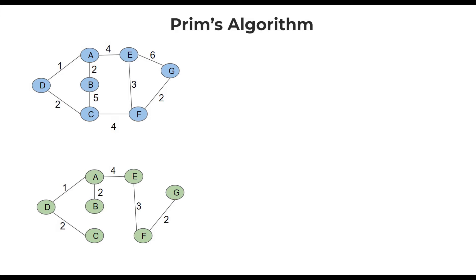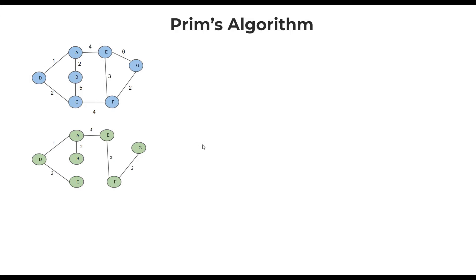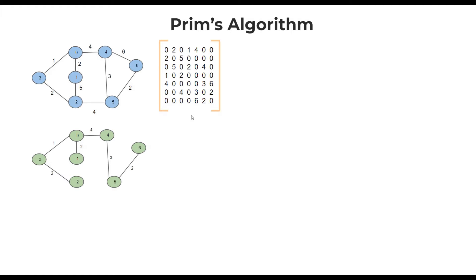Now, instead of naming vertices as ABC, let's change them to 0, 1, 2, 3, 4, 5, and 6. Let's try to write the pseudocode. Say we are given the adjacency matrix of the graph — the visual is just for our imagination; we only have this matrix as input. How are we going to express this spanning tree as a result? We can simply have a parent array which tells us what is the parent for each vertex.